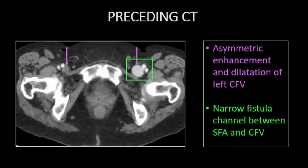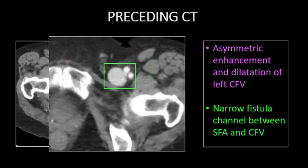The patient underwent CT prior to the ultrasound. The left common femoral vein is dilated and asymmetrically enhancing on this arterial phase study. A very narrow channel connects the artery and vein.